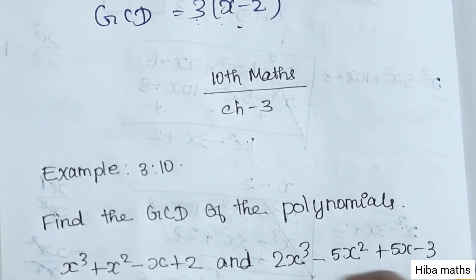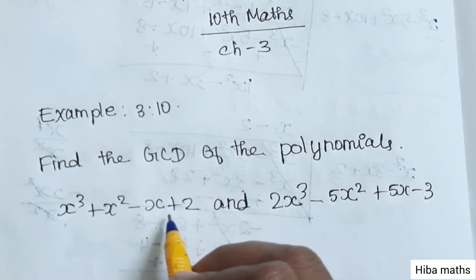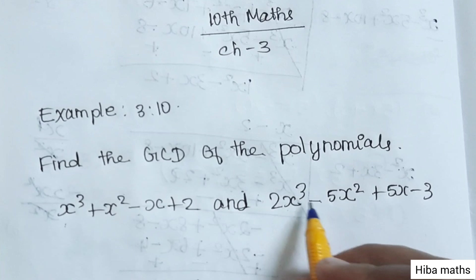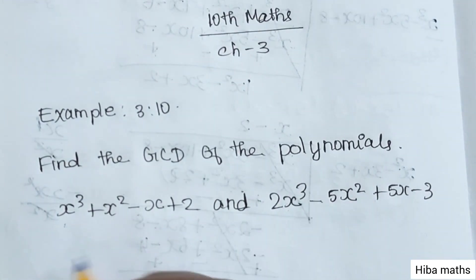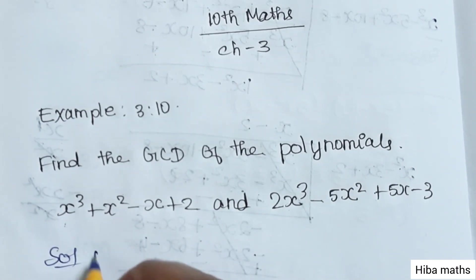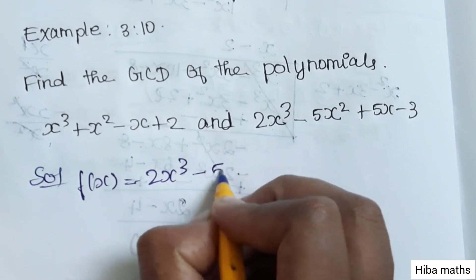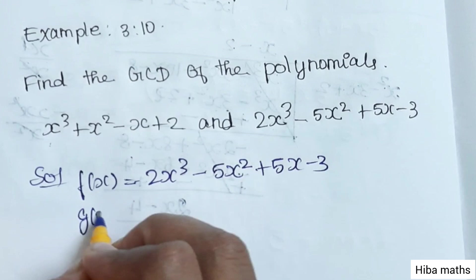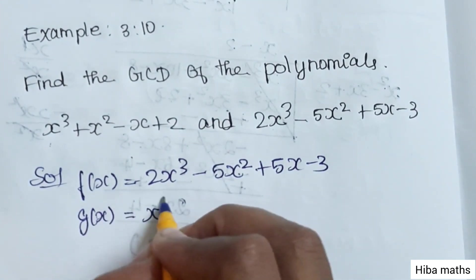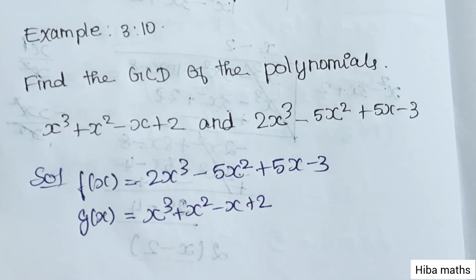Example 3.10: Find the GCD of the following polynomials: x³ + x² - x + 2 and 2x³ - 5x² + 5x - 3. So f(x) is equal to 2x³ - 5x² + 5x - 3 and g(x) is equal to x³ + x² - x + 2.